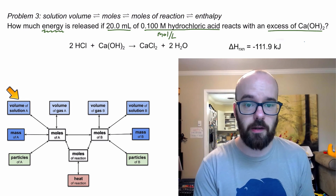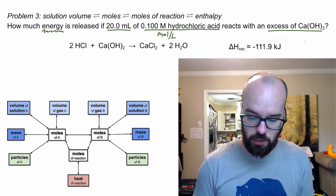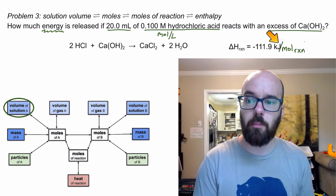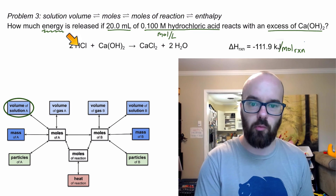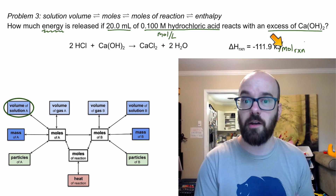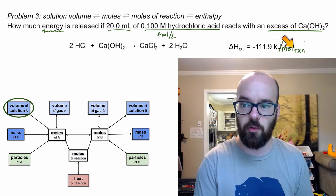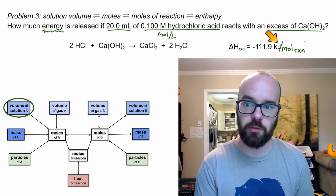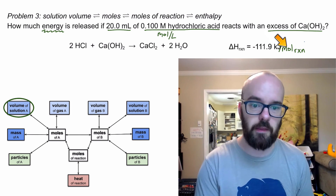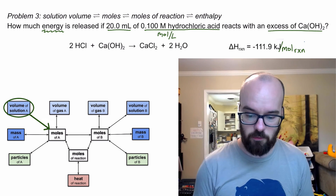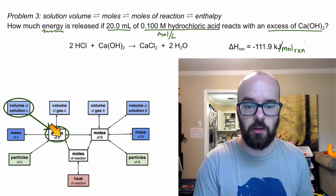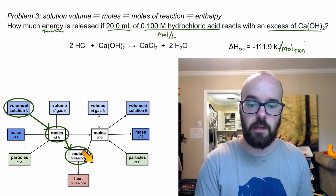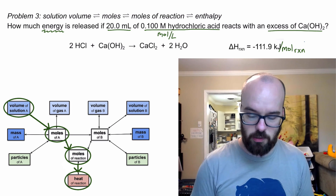Looking at the stoichiometry map, I'm starting with the volume of solution A, which is hydrochloric acid. The enthalpy of reaction is always per mole of reaction — not per one mole of HCl, but per mole times that the reaction occurs. I always write that out as per mole of reaction even though the problem usually just gives kilojoules. Starting with volume of A, I go to moles of A, then to moles of reaction, then use enthalpy to convert to the heat of reaction.